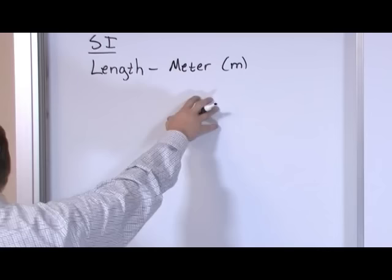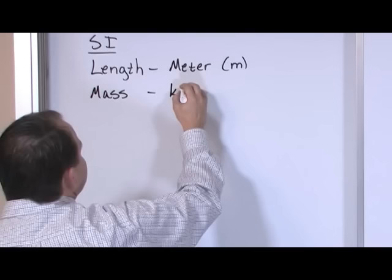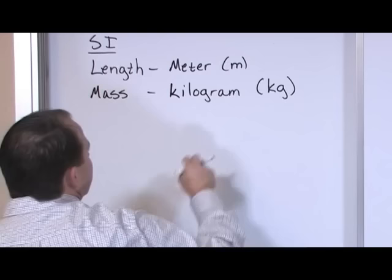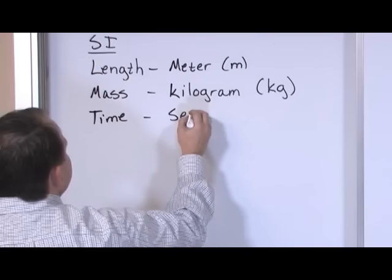The unit of mass — how much of something we have — the base unit we're always going to use is the kilogram, abbreviated kg. Gram and kilogram are all in the same family; they're talking about mass. For time, finally something that doesn't change: we use the second, letter S.